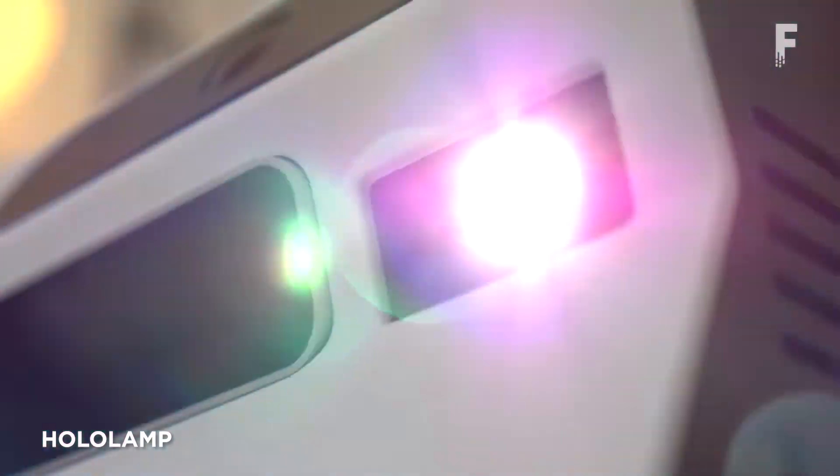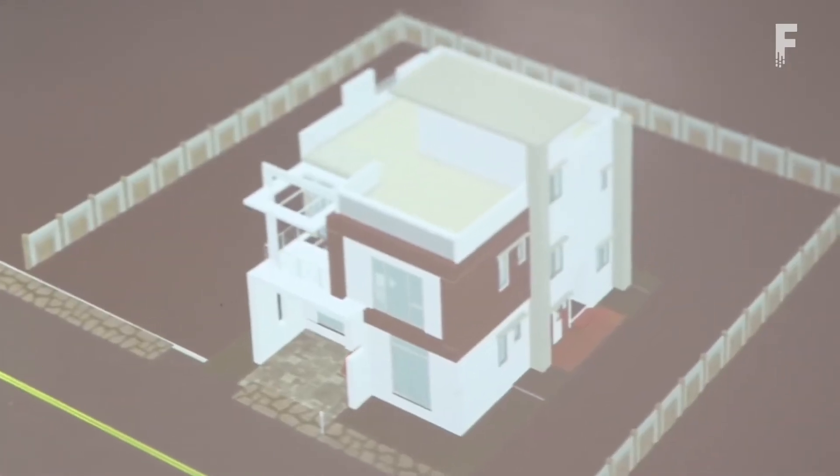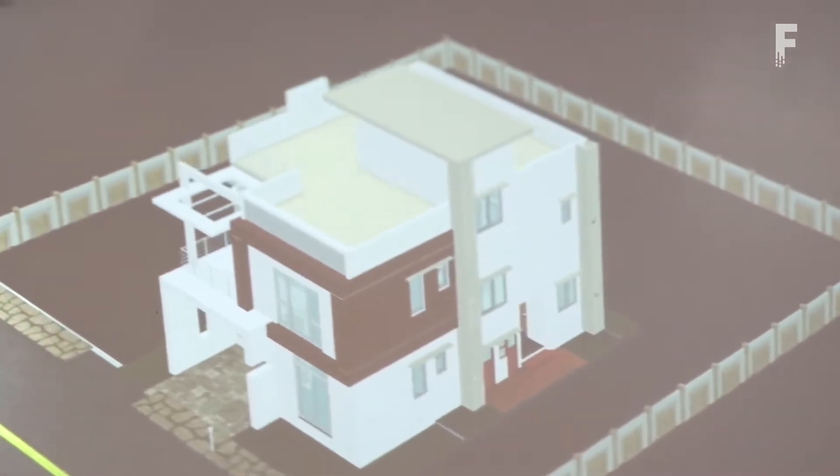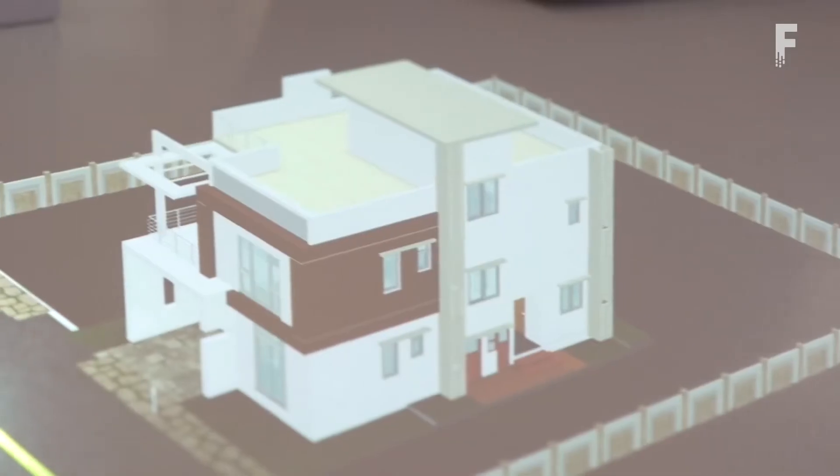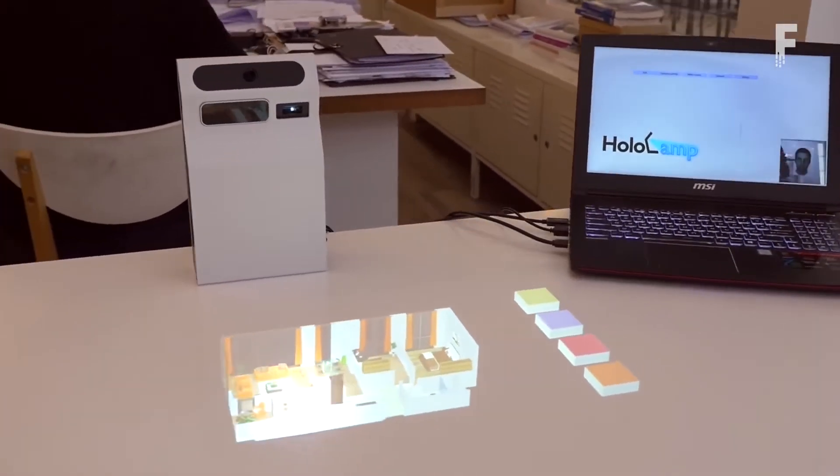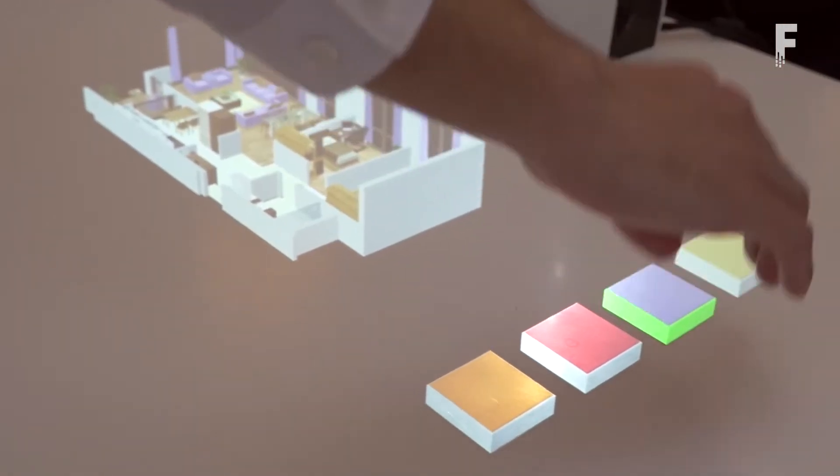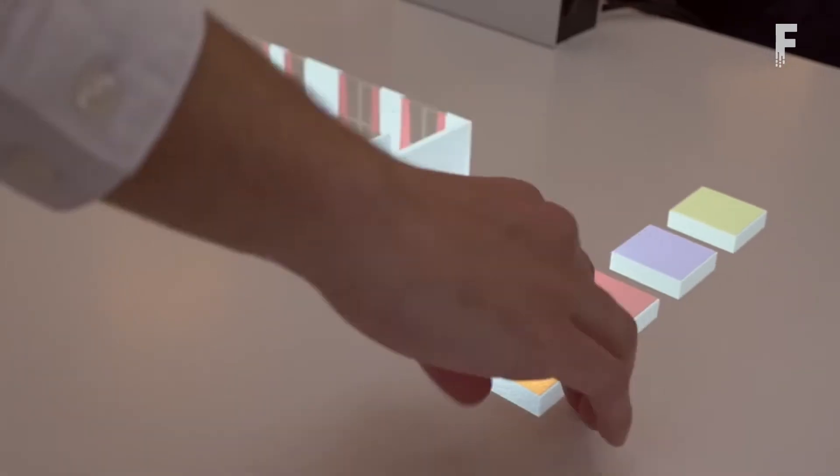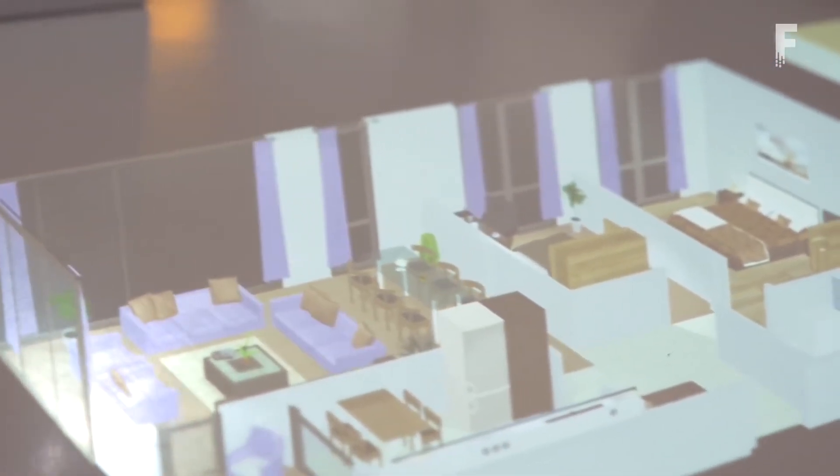HoloLamp is a glasses-free portable AR device that creates optical 3D illusions directly on your environment. Using HoloLamp, people can interact with 3D content in new and compelling ways. The 3D content exists directly in the user's environment, it is not trapped into devices anymore. More than that, the interactions are natural. HoloLamp does not constrain the user to wear or hold any equipment.